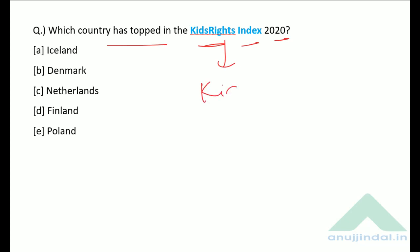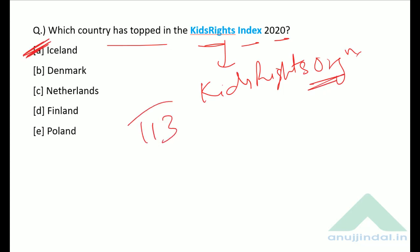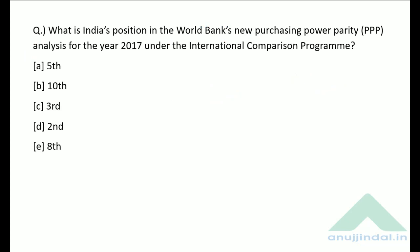Which country topped the KidsRights Index 2020? According to the KidsRights organization, Iceland is number one and India's rank is 113.